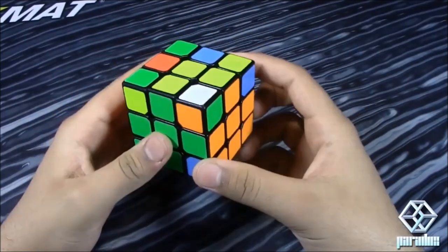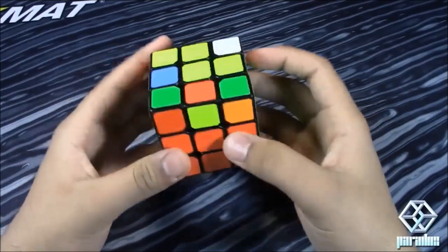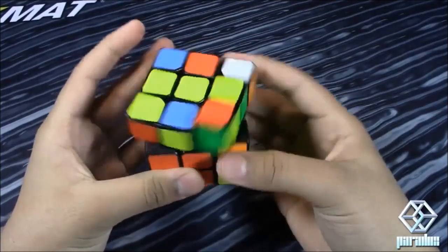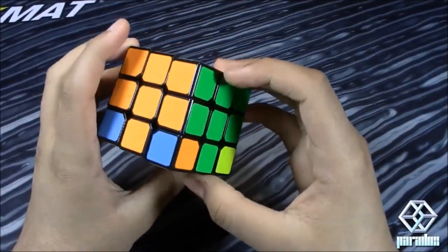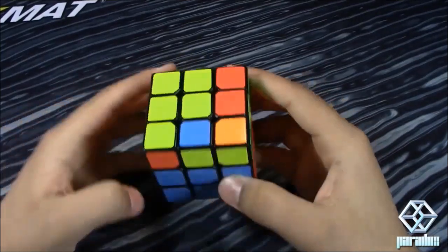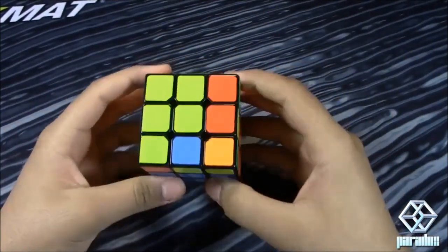So usually people would go like this and then do the algorithm, but if you see it like this, you can just go like this, perform the algorithm in a different angle to solve the situation. So that's the first thing you can do to avoid a cube rotation.